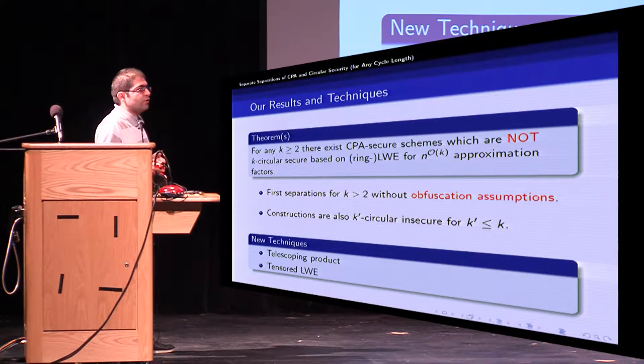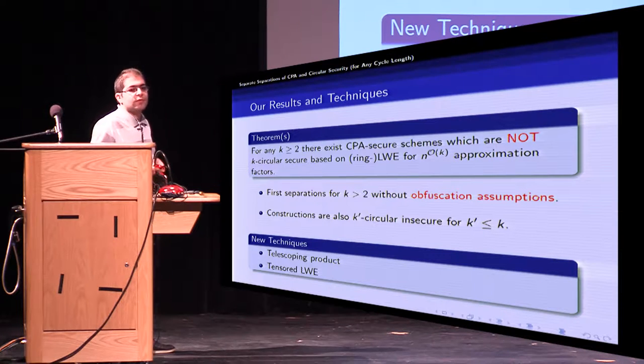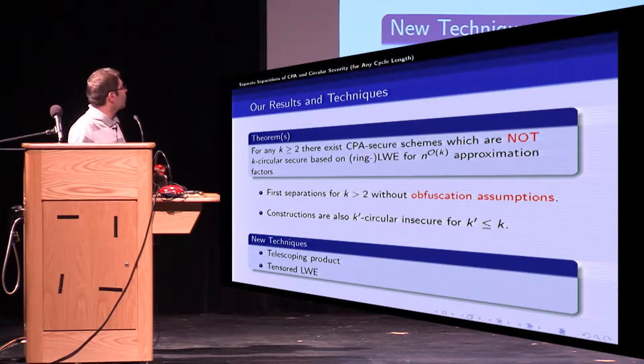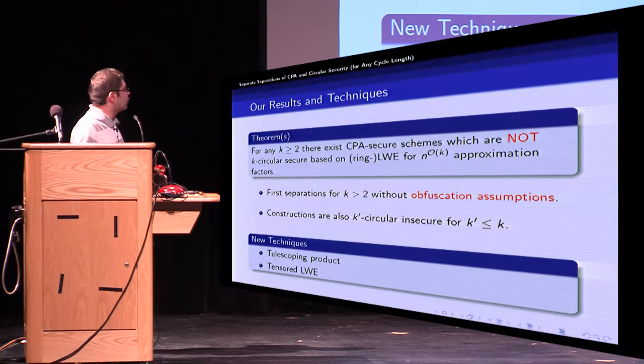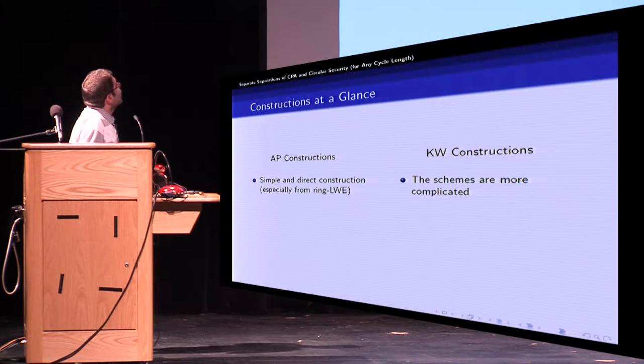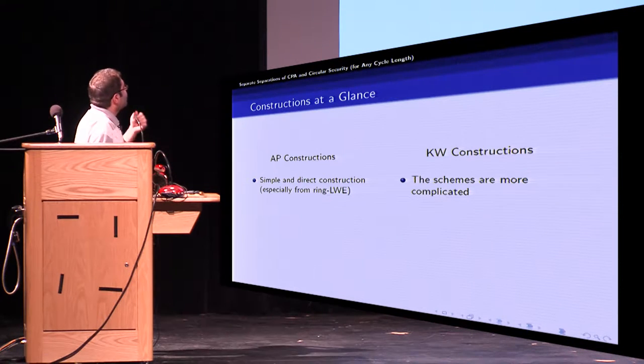We used a few new techniques to achieve these results such as telescoping products for learning with errors which is sort of the main idea in both works and tensored LWE to get commutativity of the LWE secrets.